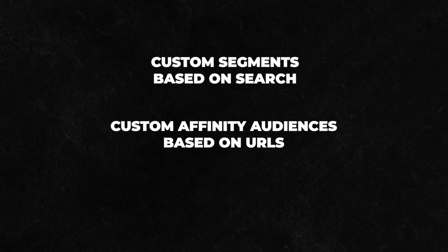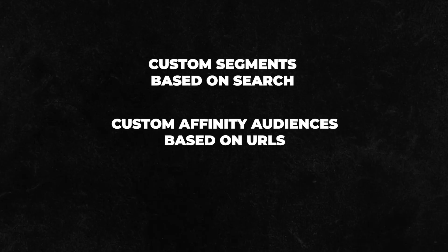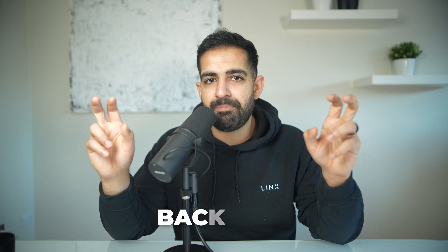Before I jump onto my computer, let's quickly talk about targeting and audiences. With YouTube ads, you're going to be presented with a thousand different targeting options. I recommend focusing on three: custom segments based on search, custom affinity audiences based on URLs, and in-market audiences. Custom segments — search audiences — are people currently searching keywords you input. For example, if you're a chiropractor, you can target people searching 'back pain' on Google.